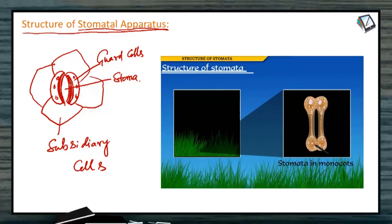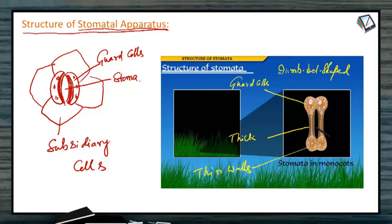or guard cells, in monocots. These are guard cells. These guard cells are dumbbell shaped. The wall at the center is thick, and the tips have thin walls. This is the Stomatal opening.